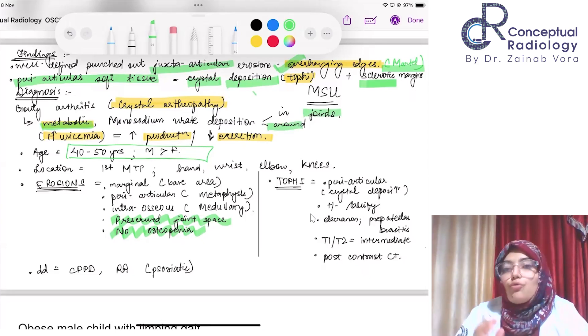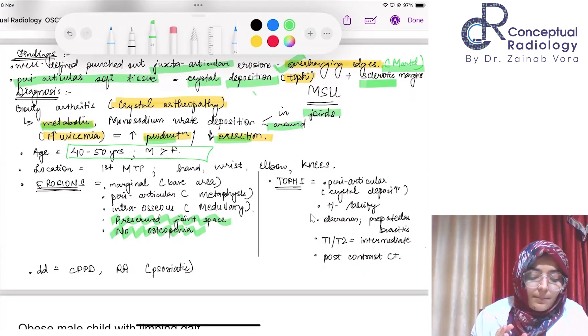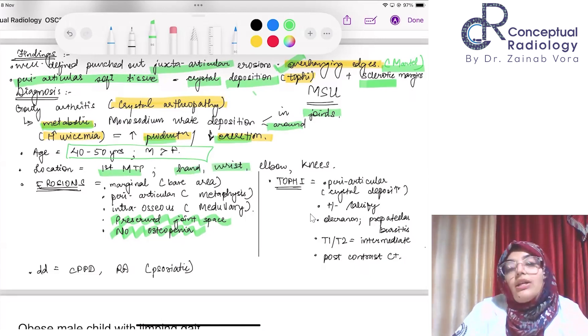Hyperuricemia can be because of two causes: either the production is more or the excretion is less. The age group is middle age, 40 to 50 years, more common in males than females. Most important, the most common location is first metatarsophalangeal joint. Apart from that, it can be seen sometimes in the hand or wrist. Even if they give you an upper limb radiograph in the exam with typical features, you can think in lines of gout.